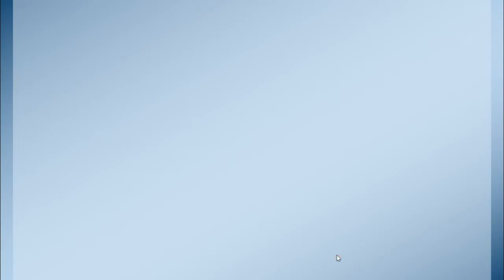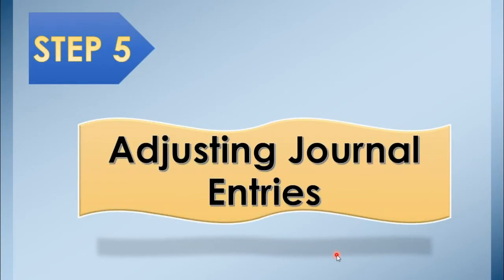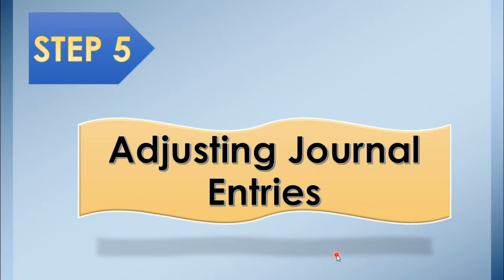Today, we are in the third part of our lesson. We are going to discuss the fifth step of the accounting cycle: adjusting journal entries. Actually, this is the sixth step, but for the purpose of a more organized recording of accounts, we move this step one step ahead.